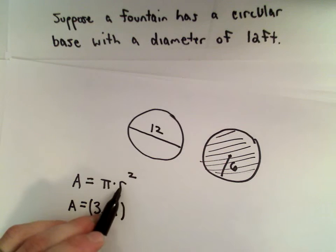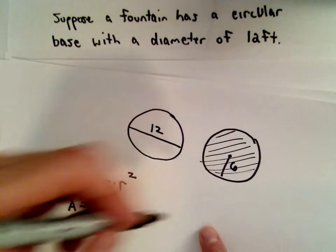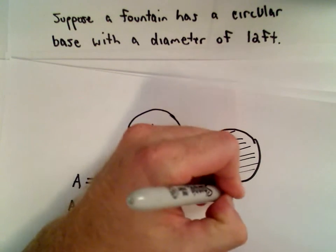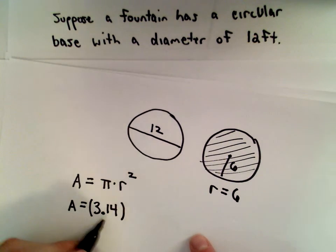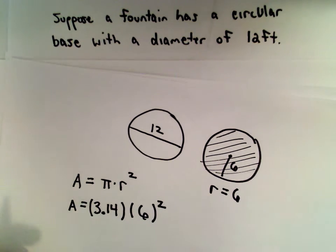We know the radius exactly, right? We said the diameter is 12, so half of that is going to be 6, so our radius is going to have a value of 6. So we'll just take 3.14, and we would multiply that by 6 squared, and that would give us our solution.